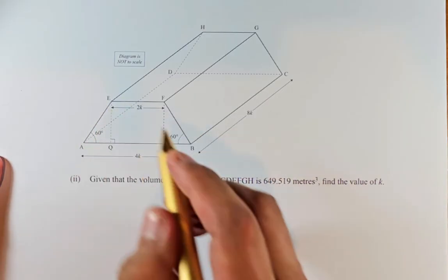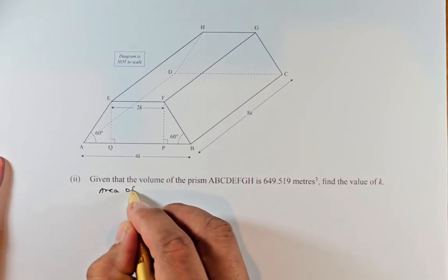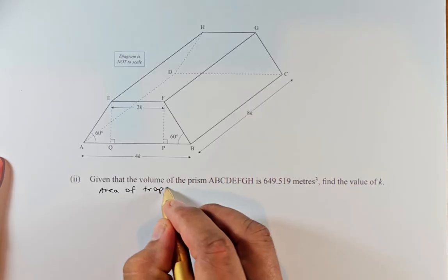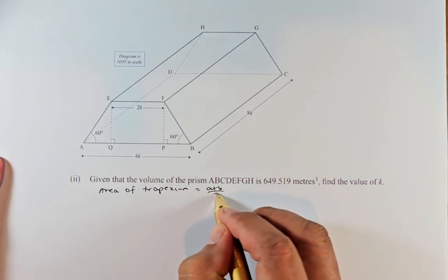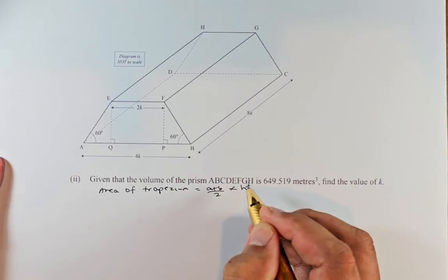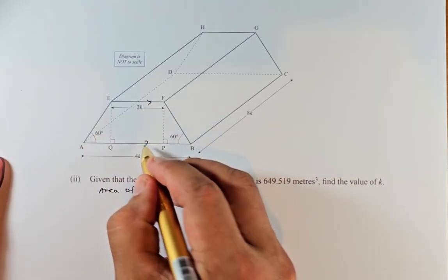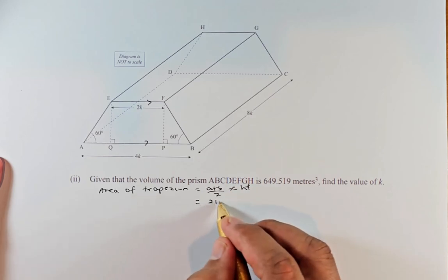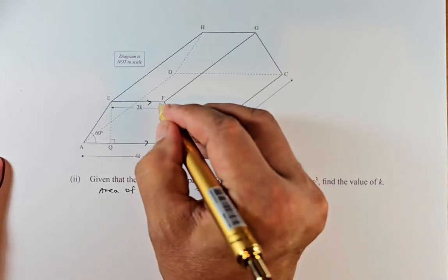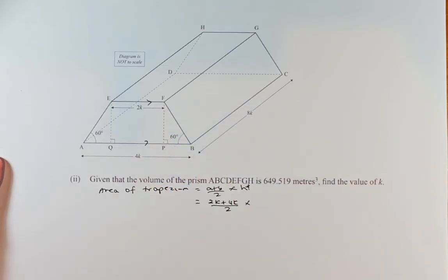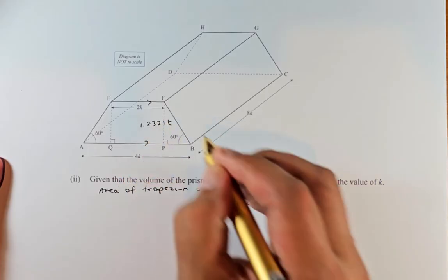The area of trapezium is going to be a plus b over 2 times height. a and b are the two parallel sides, so it's going to be 2k plus 4k divided by 2 and multiply by the height we found in last example, the height of 1.7321k.